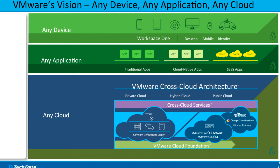To fully understand the importance of VMware solutions like vSAN, we need to begin by looking at where they fit into VMware's overall vision. You can see here a visual representation of this vision: any device, any application, any cloud. The cross-cloud architecture with cross-cloud services and cloud foundation extend the hybrid cloud strategy that is integral to VMware's vision, to help customers use any cloud to deliver any application to any device, enabling a software-defined approach to business and IT that speeds a customer's digital transformation.